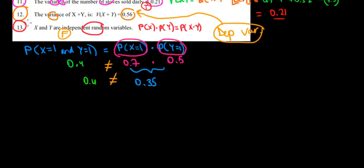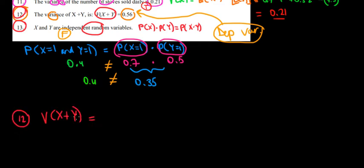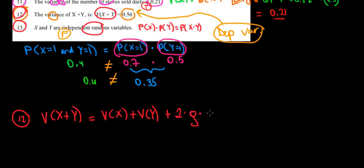Let's have a look at question 12 in this video. We want to calculate the variance of X plus Y. This is going to be a slightly long question, so we're going to solve it in several videos. Let's write the formula: the variance of X plus Y, given that they are dependent, is equal to the variance of X plus the variance of Y plus 2 times the correlation between them, times the standard deviation of X, times the standard deviation of Y.